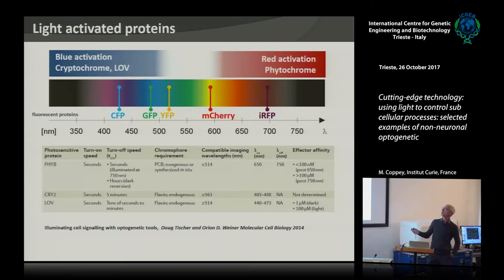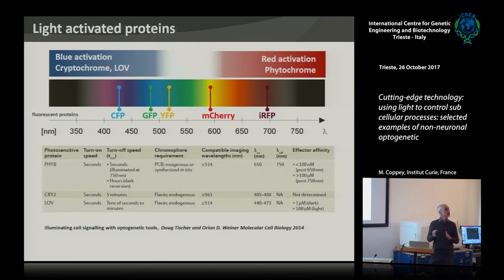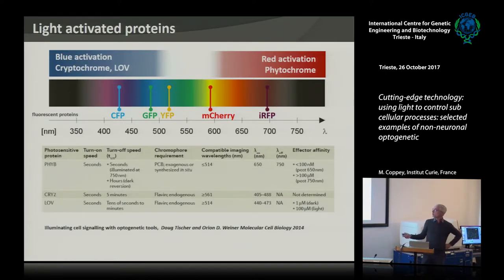There are nice reviews about this. The three main systems are: Phytochrome B, Cryptochrome 2 (CRY2), and the LOV/iLID system. I will spend most time on CRY2, which is activated with blue light. You shine blue light and it opens an active conformation for this cryptochrome protein that binds its partner called CIB1. The wavelengths are summarized nicely in reviews.